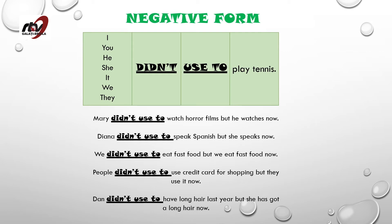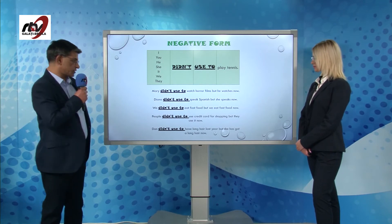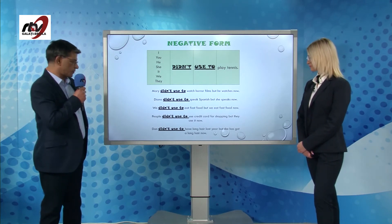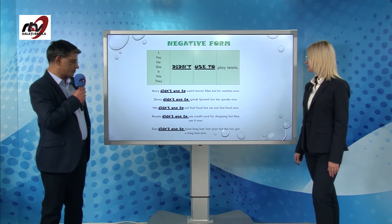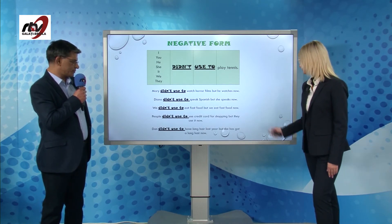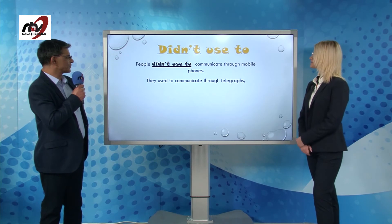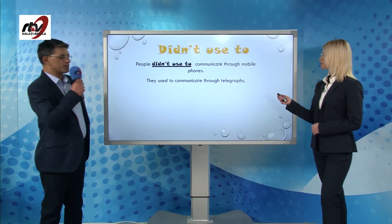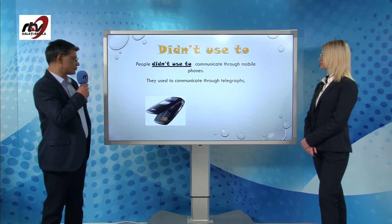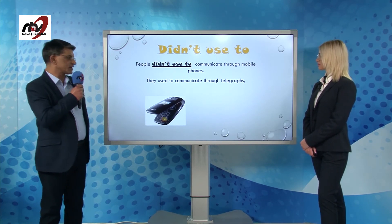And some sentences: 'Mary didn't use to watch horror films, but she watches now. Diana didn't use to speak Spanish, but she speaks now. We didn't use to eat fast food, but we eat fast food now. People didn't use to use credit cards for shopping, but they use them now. Dan didn't use to have long hair last year, but he has long hair now. People didn't use to communicate through mobile phones — they used to communicate through telegraphs.'